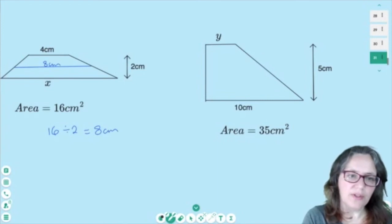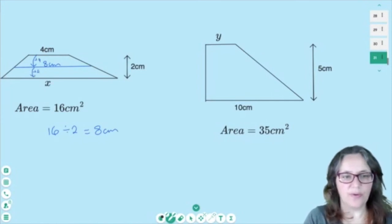And as soon as you see that 8 cm in the middle, you can go, oh, so from the top to the middle, I added 4 and got 8. So to get to the bottom, I'd better add another 4. So X will be 12 cm.